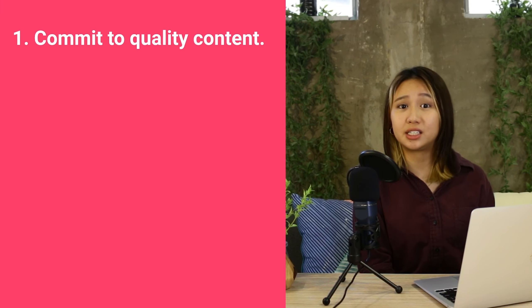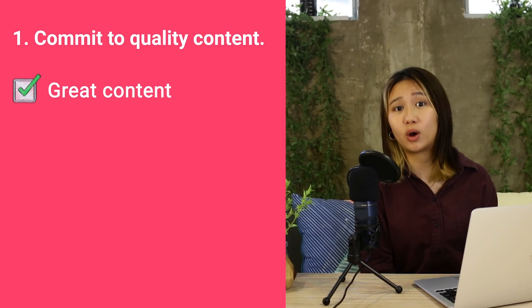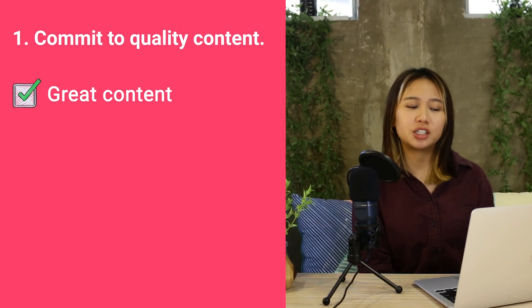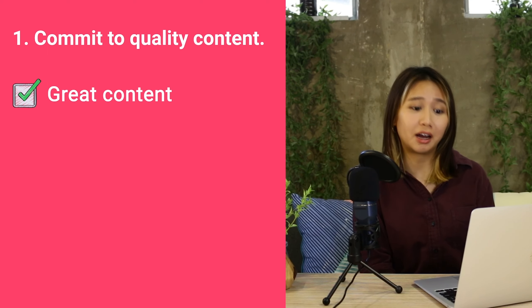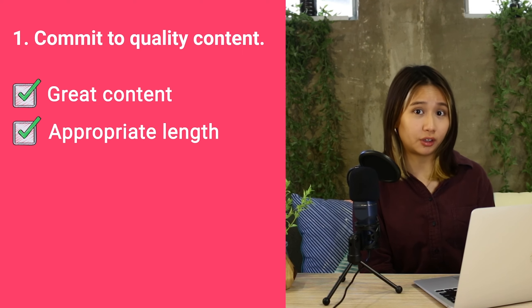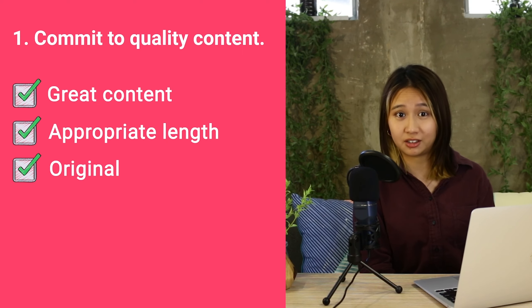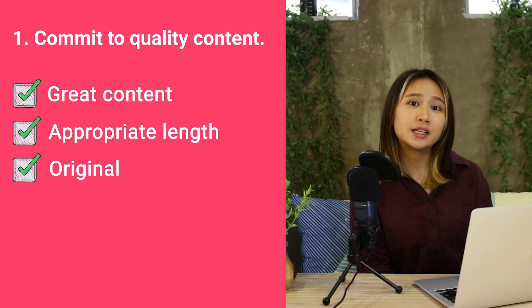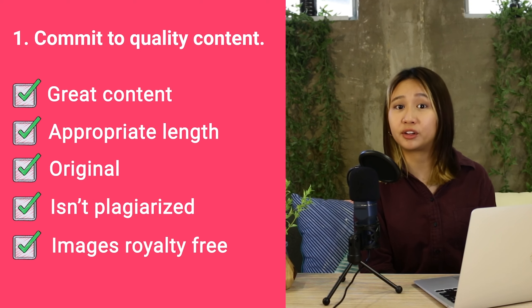Here are some best practices for using AdSense arbitrage. Number one, commit to quality content. Publishers need to ensure that they commit to quality content. Your application to AdSense may be rejected off the bat if it isn't, or suspended soon after. Try to ensure that your content isn't too short, that it's original, engaging, and of course, of value to the reader. Make sure your content isn't plagiarized, and that your images are royalty-free.